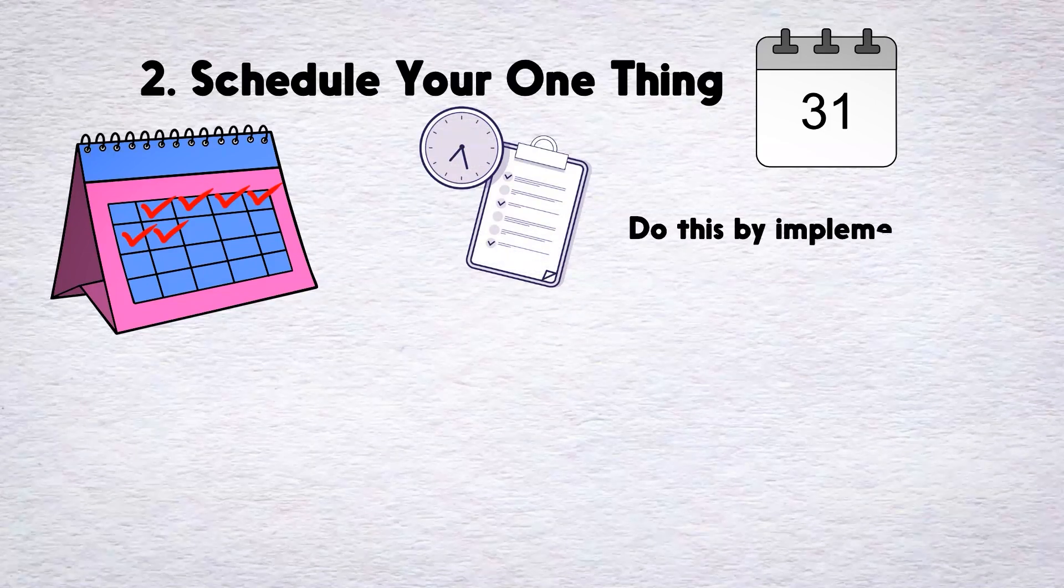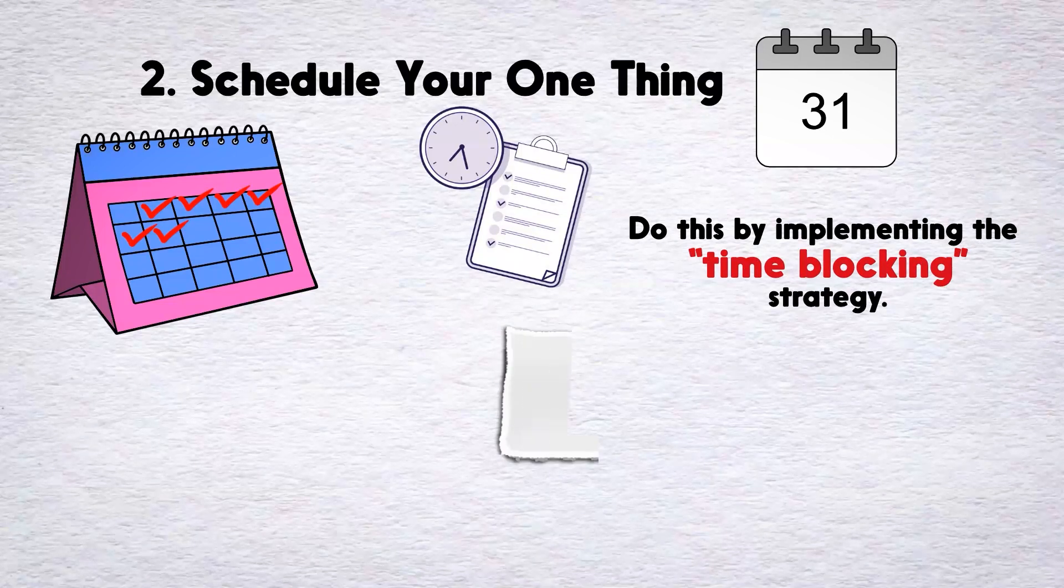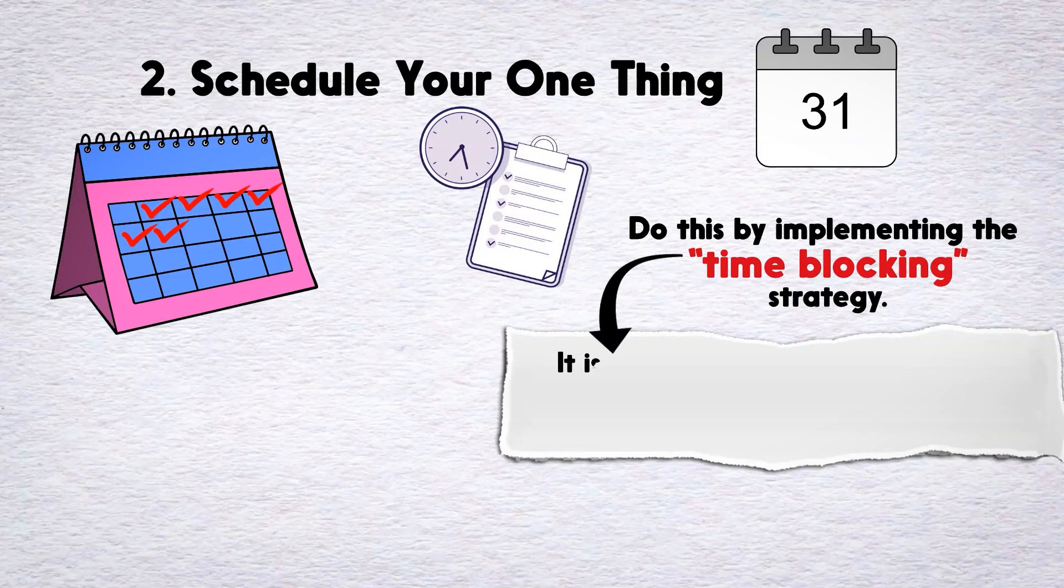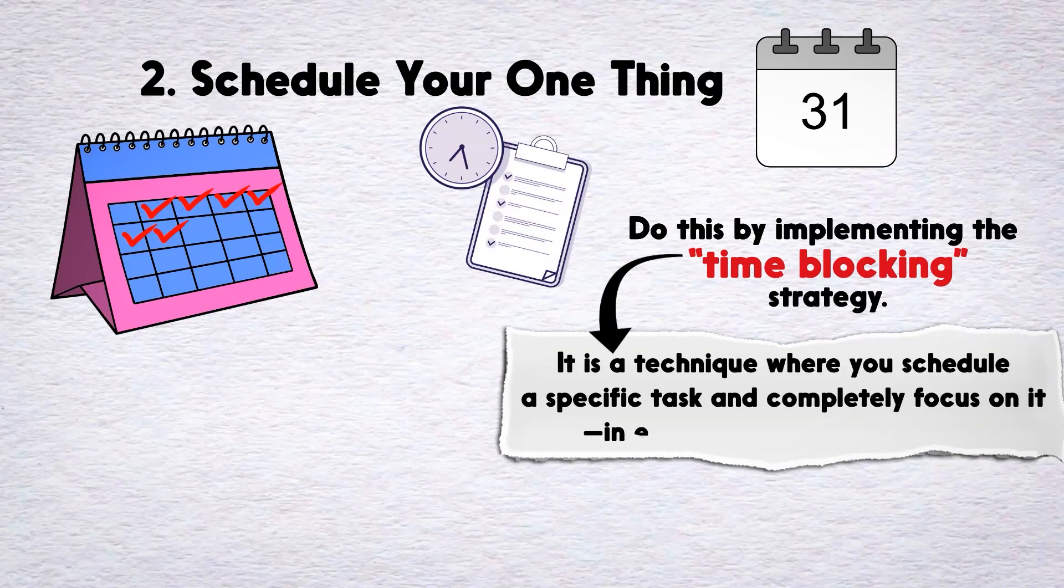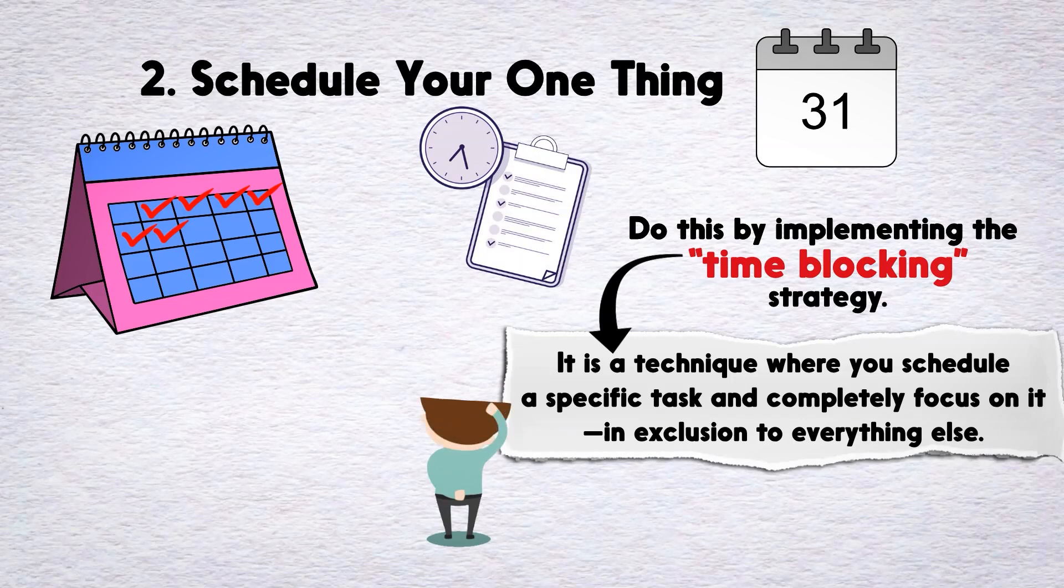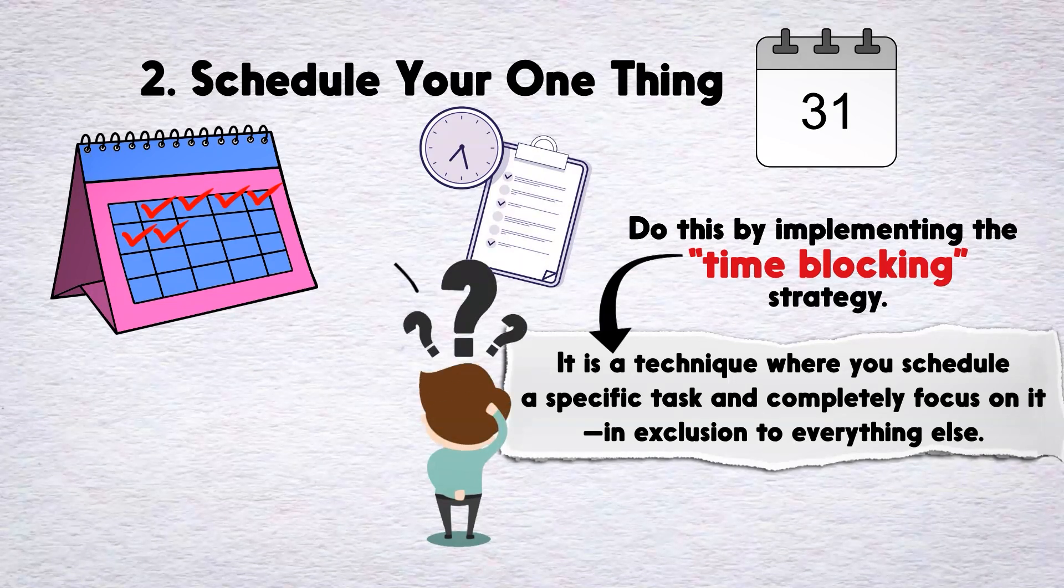And you can do this by implementing the time blocking strategy. Time blocking is a technique where you schedule a specific task and completely focus on it, to the exclusion of everything else. So how do you time block? It's simple. Get out a calendar and schedule a specific time to work on this activity every day. It's like you're scheduling an appointment, but you're scheduling an appointment with yourself.